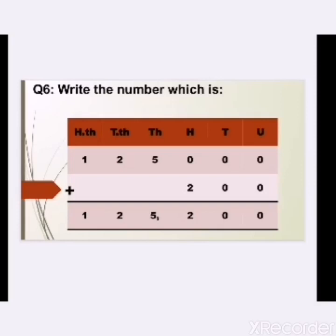Now we add from the unit column. Under unit there are two zeros: 0 plus 0 equals 0. Move to the tens column: 0 plus 0 equals 0. Move to the hundreds column: 0 plus 2 equals 2. Move to the thousands column: there is 5 and no value under it, so we write 5 as it is. Ten thousands column: there is 2 and no value under it, so we write 2 as it is. Hundred thousands column: there is 1 and no value under it, so we write 1 as it is. I hope you have understood the question well and enjoyed this lesson. Solve the rest of question number 6 at home. Thank you students. Allah Hafiz.